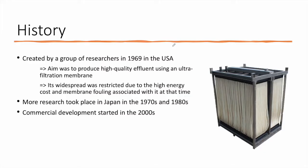A quick overview of the history. The MBR was created by a group of researchers in 1969 in the USA. The main purpose was to produce a high quality effluent using an ultra-filtration membrane, replacing the traditional activated sludge process (ASP) with a filtration process involving ultra-filtration. This group was able to reach very high quality effluent, but they faced two major problems: high energy consumption and membrane fouling — clogging of the membranes. In Japan, researchers were very interested in this innovation and did more research in the 70s and 80s to try to solve these problems, and the process was ready for market use in the 2000s.